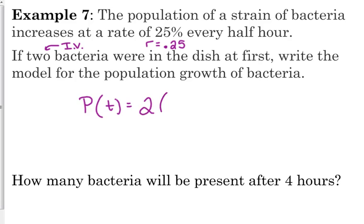So, if we want to write the model for the population growth of the bacteria, P of T is equal to the initial value, two, times one. This is growth. It increases, so it's 1 plus the rate. So, 1 plus 0.25 is 1.25 to the T or X, whichever variable you choose to use. I like to use T when we're talking about time. Okay, so that is the model.